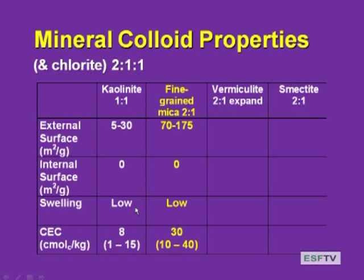We left off next on fine-grained mica. This was the two-to-one non-expanding clay with a slightly higher external surface area — meaning the crystal size must be a little smaller. Internal surface area was practically zero because potassium held those interlayer spaces together so tightly, leaving very little capacity for water and cations to fit in between. For the same reason, swelling was low. The average CEC for fine-grained micas is 30 centimoles of charge per kilogram, in the range of 10 to 40.